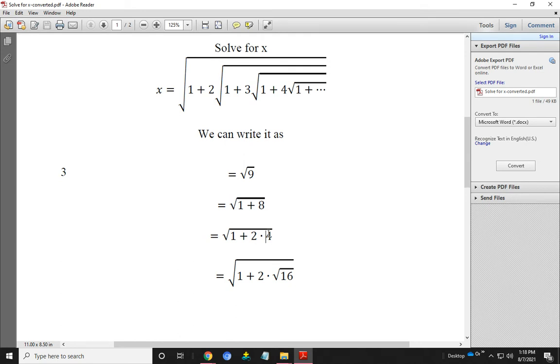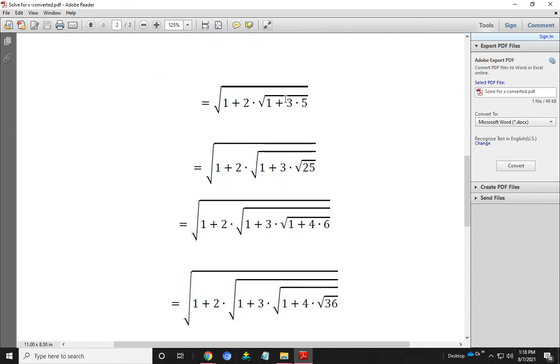Then we write 4 is root over 16, that is root over 1 plus 2 into root over 16. We can break 16 as 1 plus 3 into 5. So our equation becomes root over 1 plus 2 into root over 1 plus 3 into 5.